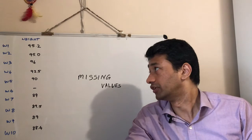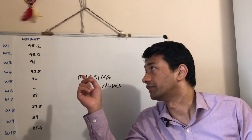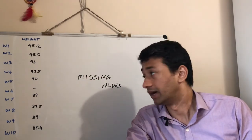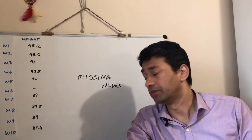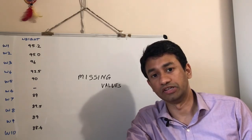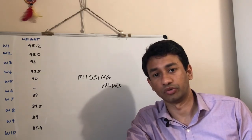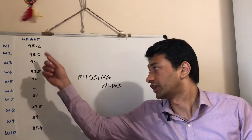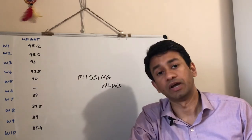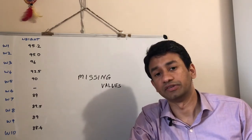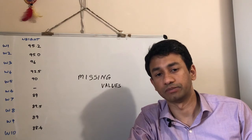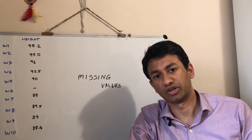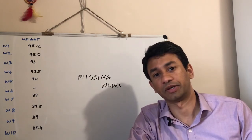As you see here, this is a simple dataset where we have weight tracked over various weeks. Maybe this is data of someone who is trying to reduce their weight, and we have a data point for each and every single week. We can see that the data is missing for week six. So this is a problem of missing data.